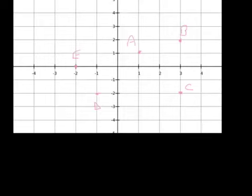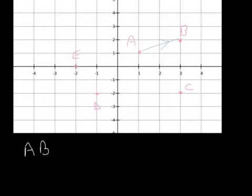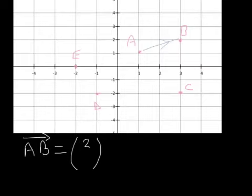This video is about vectors. To start with a reminder about GCSE work on vectors: the vector that takes you from A to B can be written as AB with an arrow over the top. It's written as two numbers — the top number is the displacement in the x direction, which is 2, and the second number is the displacement in the y direction. So from A to B, it's 2 along and 1 up.